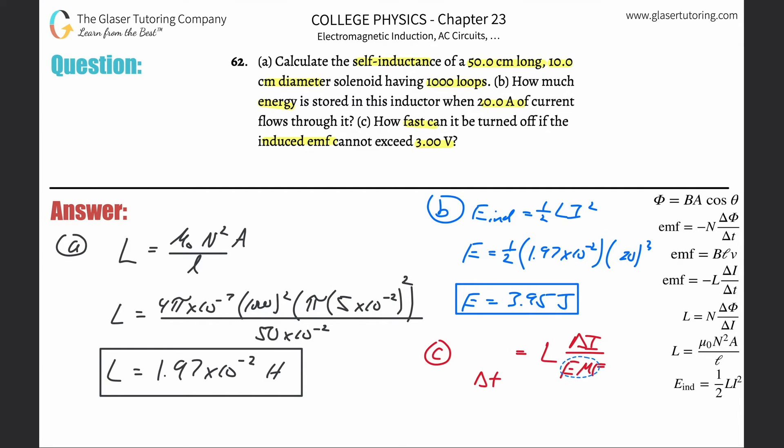It has to be turned off, and if there was a 20 amp current flowing through it, then obviously the change in the current is going to be 20 amps. So the inductance that we found is 1.97 times 10 to the minus 2, times the change in current, which was 20, divided by that maximal EMF of 3, and then we're going to find the time.